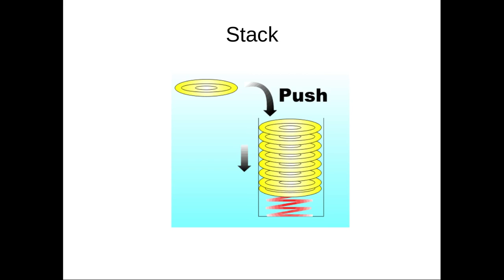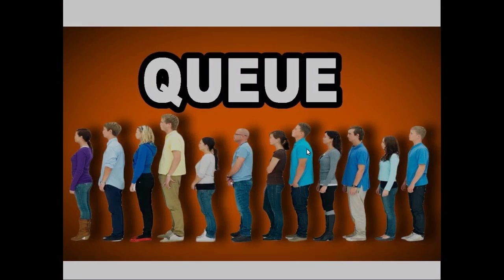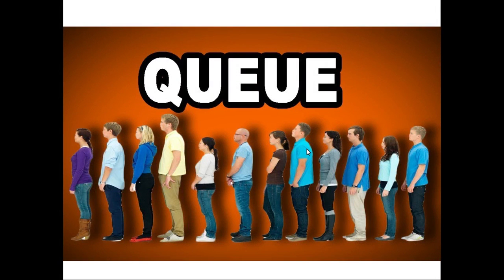That means: the data kept at the bottom — which was stored first — can be accessed only when you take out all the items placed on top of it. This is the method of stack. A pointer is used which always looks at the top of the stack. We will see this in detail later.